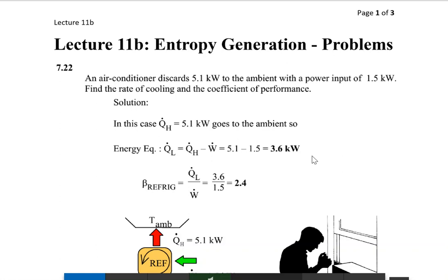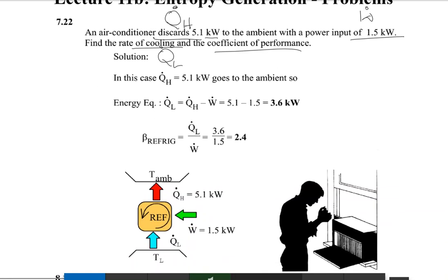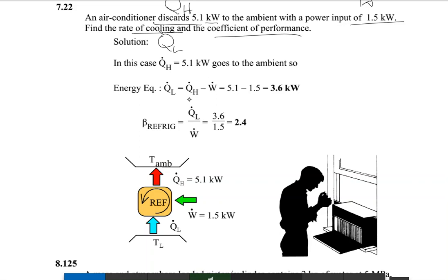When we talk about what the air conditioner discards, that is Q_H, and as it is in kilowatts that means Q in kilojoules per second. The power input would be W-dot, which is 1.5 kilowatts. The rate of cooling is Q_L, which is the heat that needs to be absorbed. Since we have Q_H and W, Q_L equals Q_H minus W: 5.1 minus 1.5 equals 3.6 kilowatts — the rate of cooling.